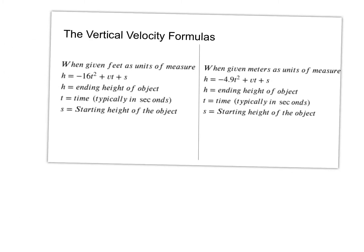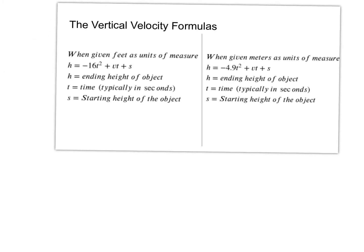Here's a review of our formulas from the previous video. Vertical velocity is when the object is on the ground. When we're given feet, we use negative 16 in front of our formula, and when we're given meters, we use negative 4.9.